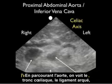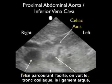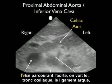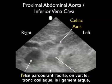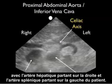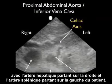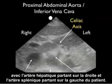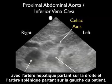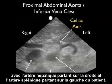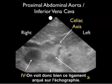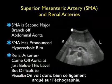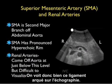As we scan through the aorta, we see the celiac axis — the seagull sign — coming off the aorta. To the right is the hepatic artery and to the patient's left is the splenic artery. The seagull sign is well seen on bedside ultrasound.